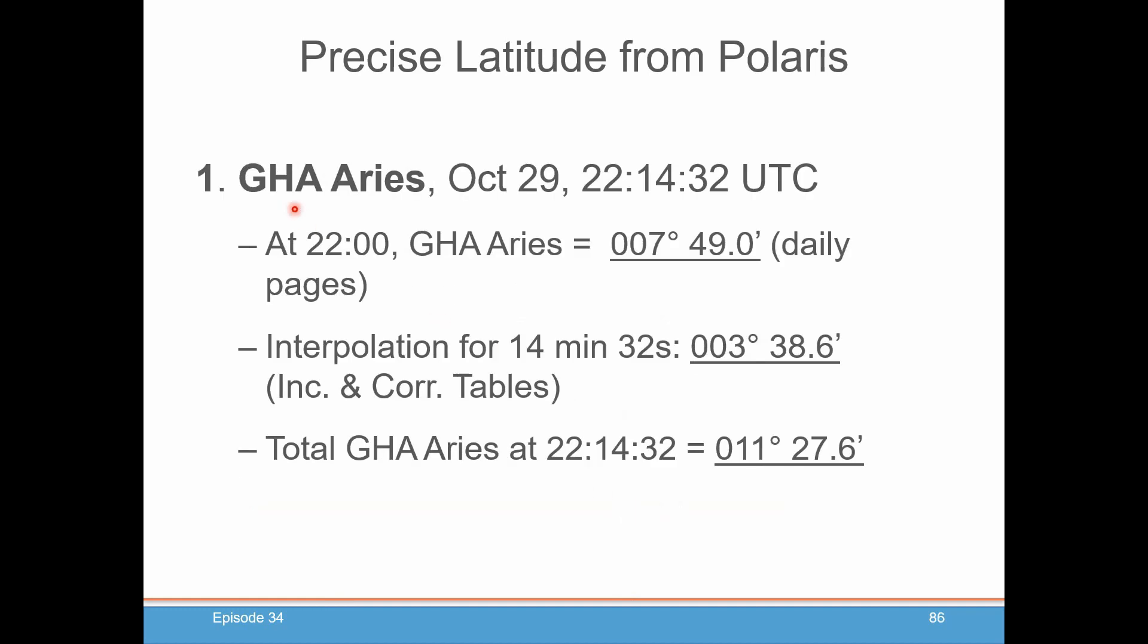So if you looked up in the almanac, or at least in the example almanac in the exercise book for October 29, 2003, at 22:14:32 UTC, at 22:00 hours, you'll see GHA of Aries was 7 degrees, 49.0 minutes. You go into the increments and correction table for 14 minutes, 32 seconds, and you'll pull out 3 degrees, 38.6 minutes. You add those together, and you see that at that moment, GHA of Aries is 11 degrees, 27.6 minutes.